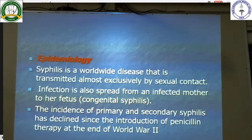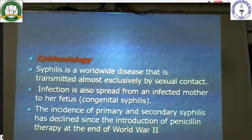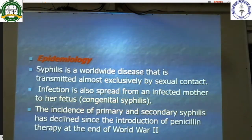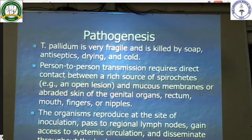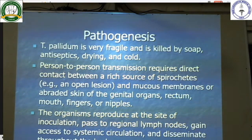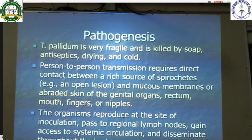Epidemiology: syphilis is a worldwide disease transmitted by sexual contact. Infection is also spread from an infected mother to her fetus — causing congenital syphilis. The incidence of primary and secondary syphilis has declined since the introduction of penicillin. Treponema pallidum is very fragile and is easily killed by soap, antiseptics, drying, or cold temperatures. Person-to-person transmission requires direct contact between a rich source of spirochetes — an open lesion — and mucous membrane or abraded skin of the genital organs, rectum, mouth, fingers, or nipples.